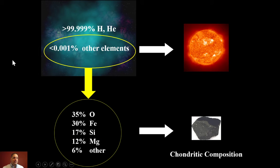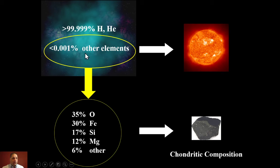We start with the nebular composition, which is very similar to the composition of the Sun. As the nebular gas flows into the Sun and clears out, what's left behind are the heavier elements. Of what remains after the Sun forms and the nebula is gone: 35% is oxygen, 30% is iron, 17% is silicon, 12% is magnesium, and 6% is everything else — hydrogen, helium, lithium, aluminum, and other elements. So a third of what's left is oxygen and another third is iron. That is the chondritic composition.